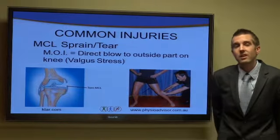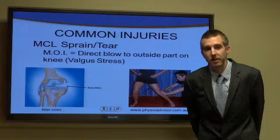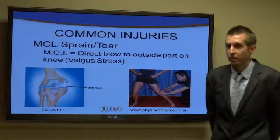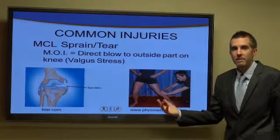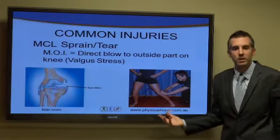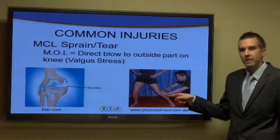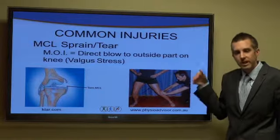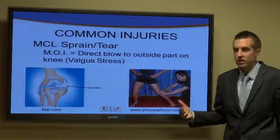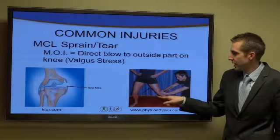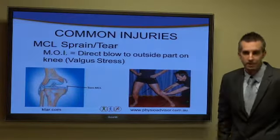The MCL is another common ligament that basketball players suffer injury from. You come down for a rebound, an opponent trips or falls over you, and they land on the outside of your knee, putting what we call a valgus stress, which puts a strain on the inside part of the knee.